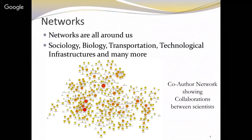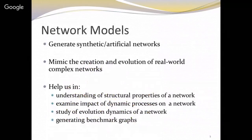Networks are everywhere. We are surrounded by networks and we live in an interconnected world. Any interconnected system can be represented by a graph, also known as a network. A co-author network is one such example in which nodes are authors and edges show that two authors have collaborated together. Network models are used to generate synthetic artificial networks which mimic real-world networks. After the groundbreaking discoveries of small-world and scale-free networks in the late 90s, researchers actively pursued network generation models. These models help us understand structural properties such as associative mixing, presence of hierarchies, and presence of communities.